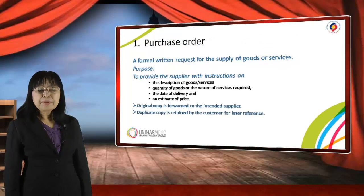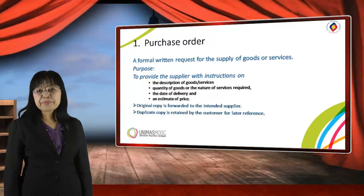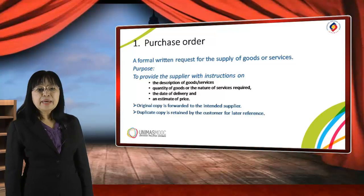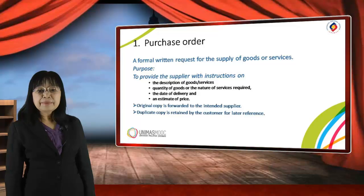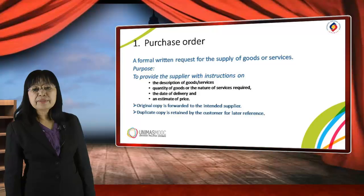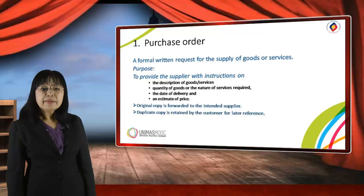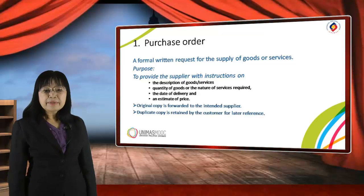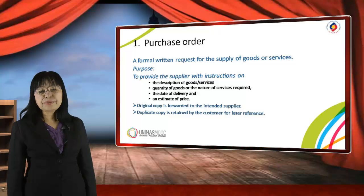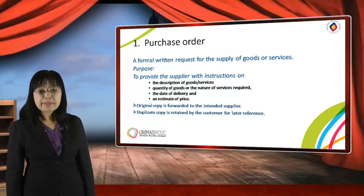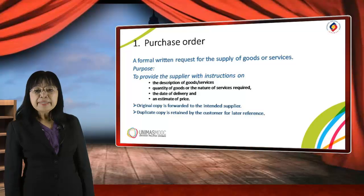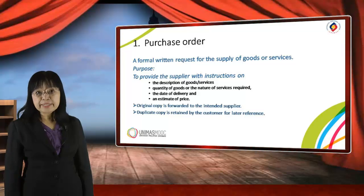Purchase order. A purchase order is a formal written request for the supply of goods and services. Purchase orders include: the description of the goods and services, the quantity of goods or nature of the service required, and the date of delivery and the estimated price. The original copy of the purchase order is forwarded to the intended supplier, and the duplicate copy is maintained by the customer for later reference.